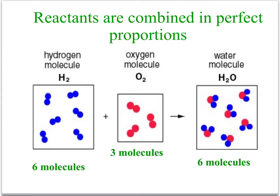Here we see what we just mentioned: we have six molecules of hydrogen, three molecules of oxygen, and producing six molecules of water. These reactants are combined in perfect proportions — we have exactly the right amount of hydrogen, exactly the right amount of oxygen, and none is left over. This is a situation where both reactants are what we call limiting.